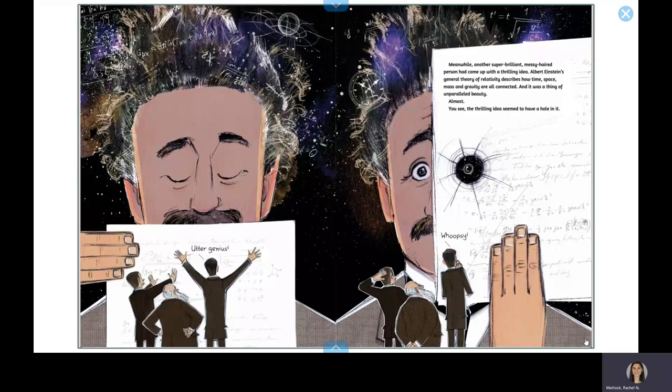Meanwhile, another super brilliant, messy-haired person had come up with a thrilling idea. Albert Einstein's general theory of relativity describes how time, space, mass, and gravity are all connected, and it was a thing of unparalleled beauty. Almost. You see, the thrilling idea seemed to have a hole in it.